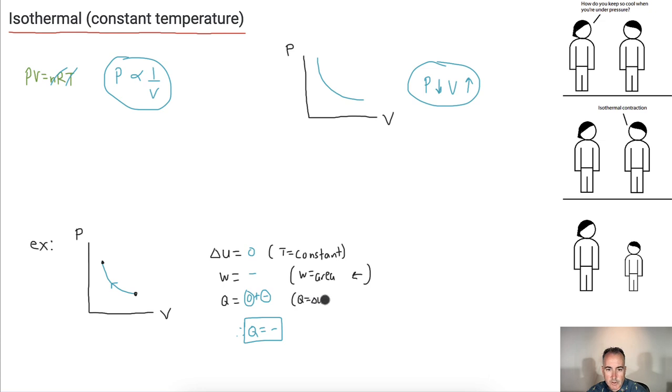I'm writing Q equals delta U plus W down repeatedly on purpose so you see what I'm doing — so it becomes really easy and obvious.